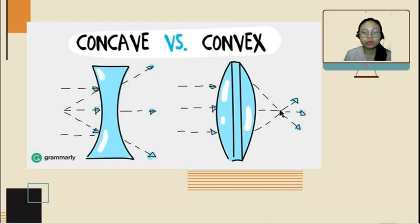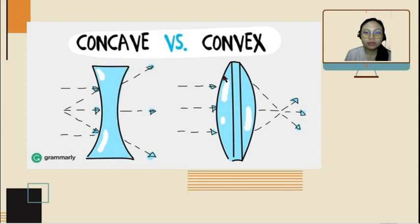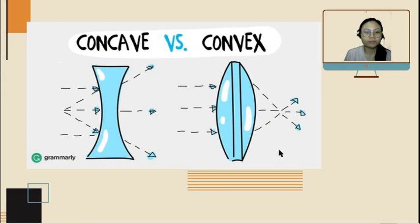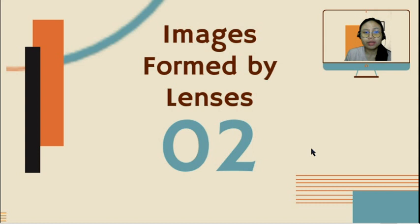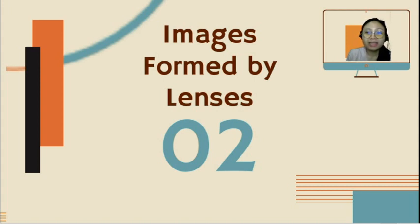That is the common intersection point. When the ray is at the top part of the lens, the bending is greater. When it is at the middle — the vertex — there is no bending, because it is 180 degrees. Now let's talk about the images formed by lenses. We had already discussed the kinds of lenses.